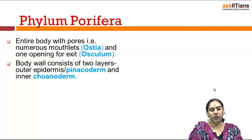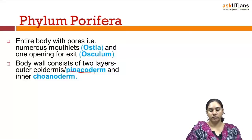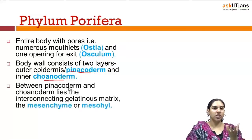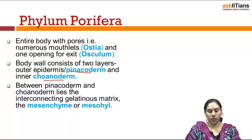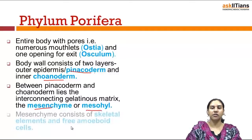The body wall of the sponges consists of two layers: the outer pinacoderm and the inner coanoderm. Between the pinacoderm and the coanoderm, there is a distinct gelatinous matrix called the mesenchyme or mesohyle, which acts as an interconnecting layer between the two. The mesenchyme consists of skeletal elements or free amoeboid cells.